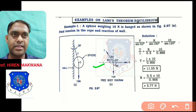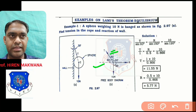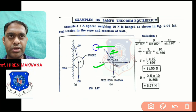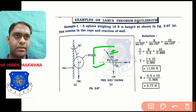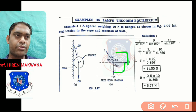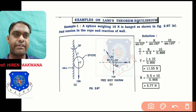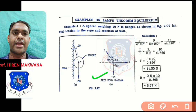This angle is 60. So this angle is obviously 30 because the total is 90. The right side angle is also 90, and the lower angle is also 90. So now all the angles are available. This is the free body diagram.